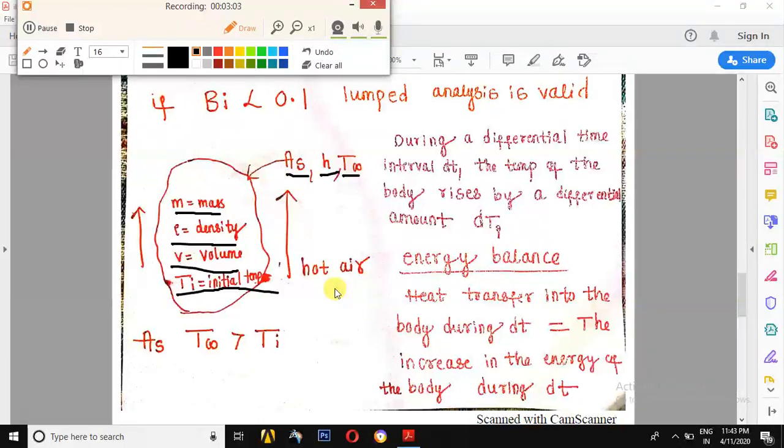As atmospheric air has a temperature more than that of the body, heat always flows from higher temperature to lower temperature. So here the mode of heat transfer is convection.